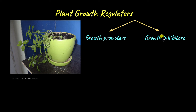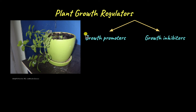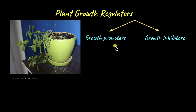This promotion of growth and inhibition of growth are regulated by plant hormones, also known as plant growth regulators. Just like how we have hormones in our body that control every major function, plants also have hormones in them that control their growth. In the category of growth promoters, we are going to see auxins, gibberellins, and cytokinins.